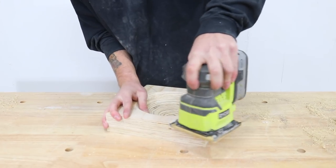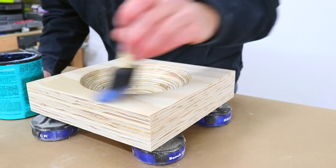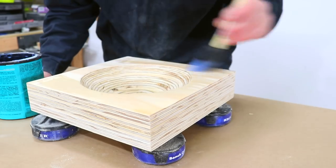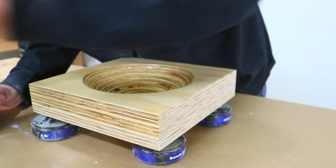I sanded everything with 80, 150, and 220 grit sandpaper then put on three coats of matte polycrylic as a finish. I wanted it to be as low gloss as possible that way the light wouldn't bounce off the base.